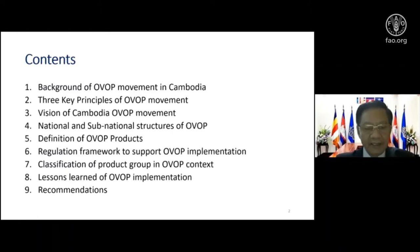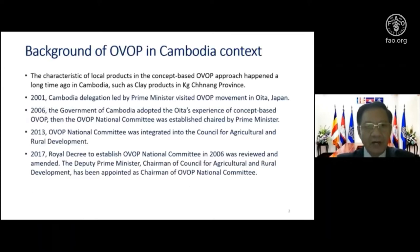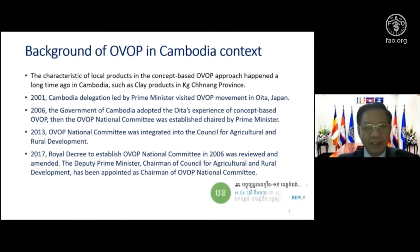Number eight is the lessons learned from implementing OVOP in Cambodia. The characteristics of local products in the concept-based OVOP approach have existed in Cambodia a long time ago. For example, in one province in the Northeast, a few communities have been producing clay products for many generations, continuing as a family tradition until now. That is why we consider the OVOP approach not just learned from Japan, but something some provinces already practiced through village products historically.